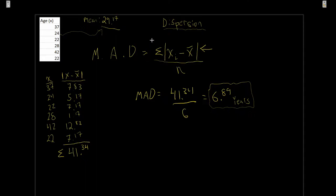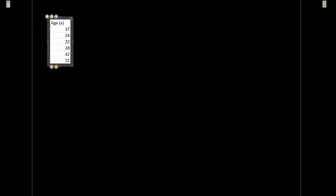The mean absolute deviation isn't one we use a lot — we introduce it because it's mathematically easy to process and intuitive: we're just taking the average deviation. Here's all our deviations, we had six of them, so we figure out the average. However, absolute values can be difficult and problematic in some scenarios, so going forward we'll look at another way to calculate essentially the same thing: the standard deviation.